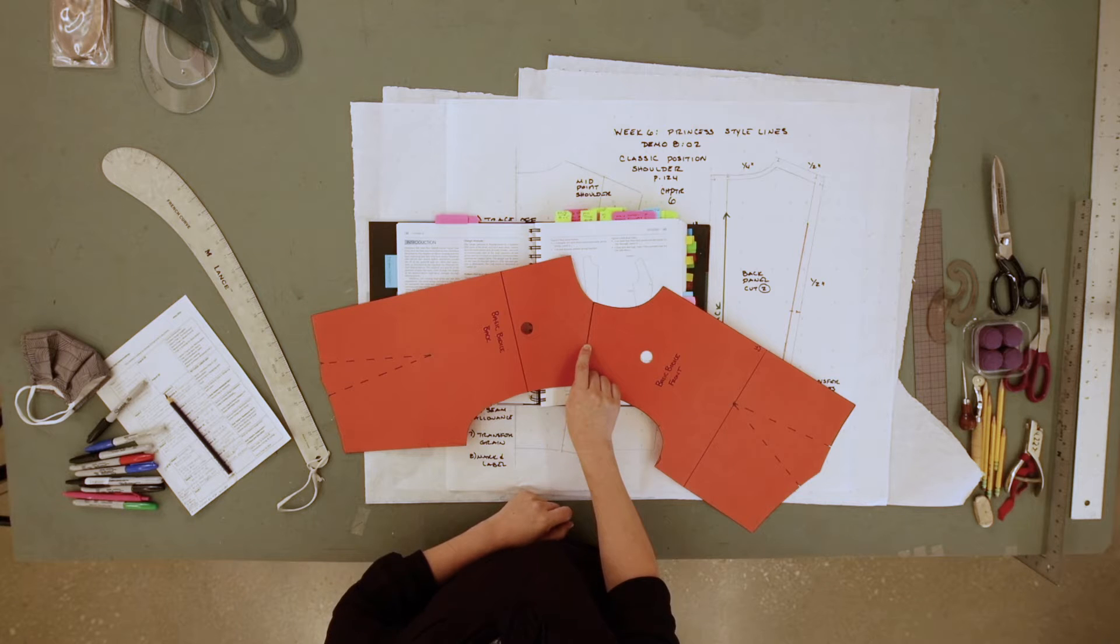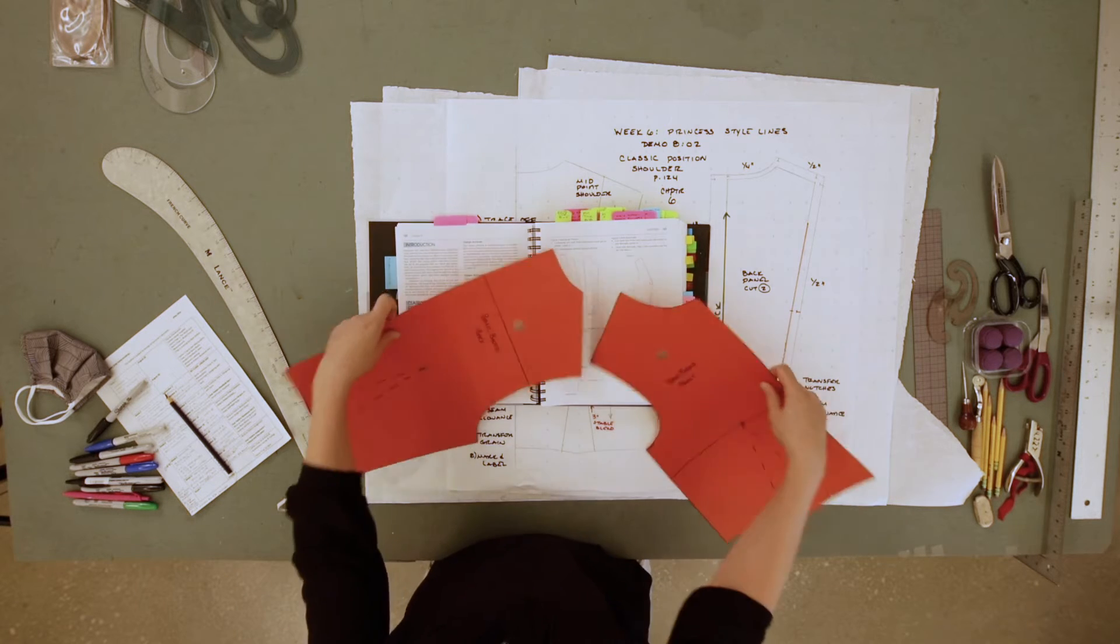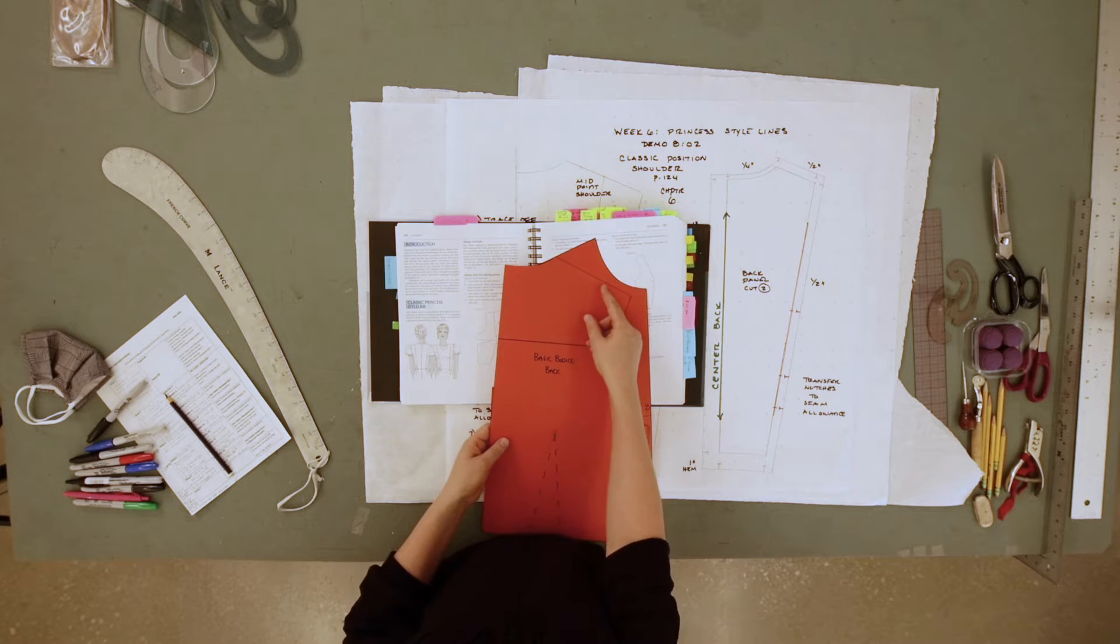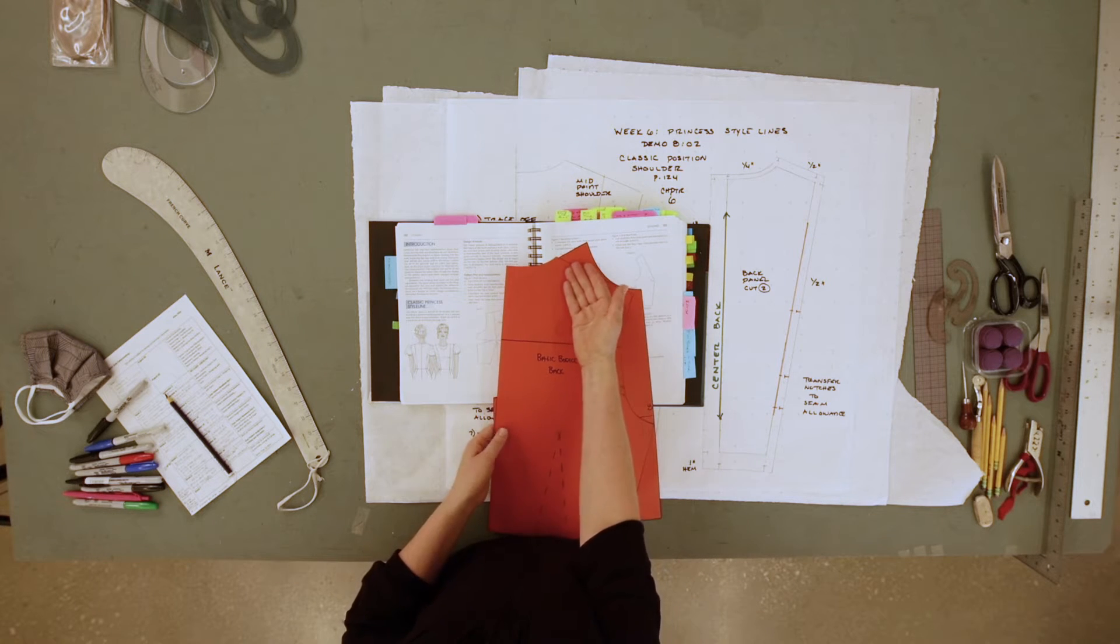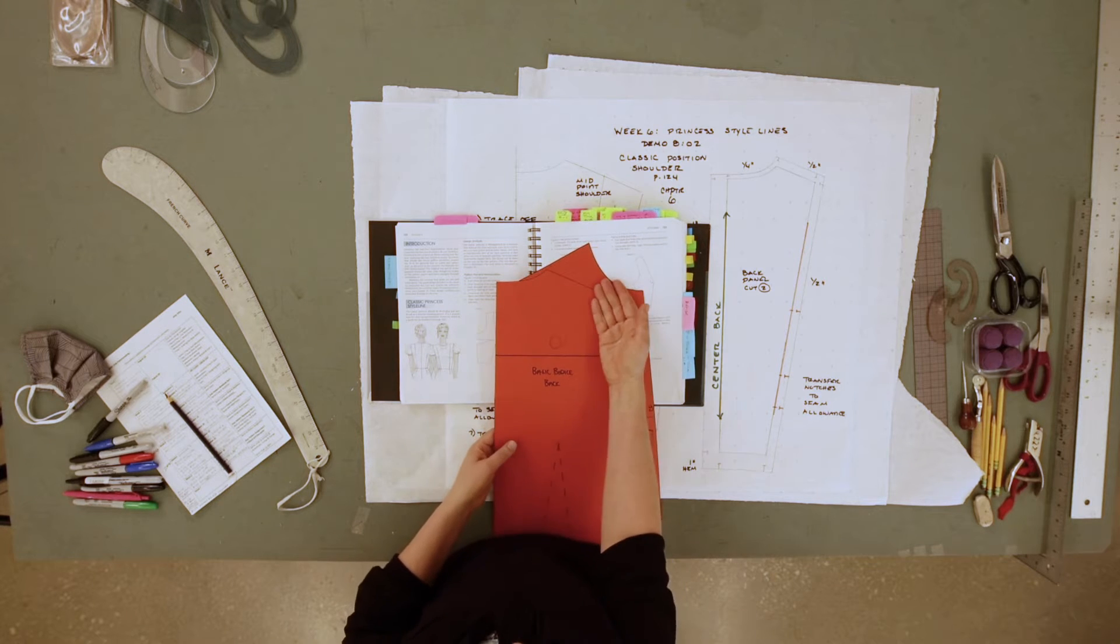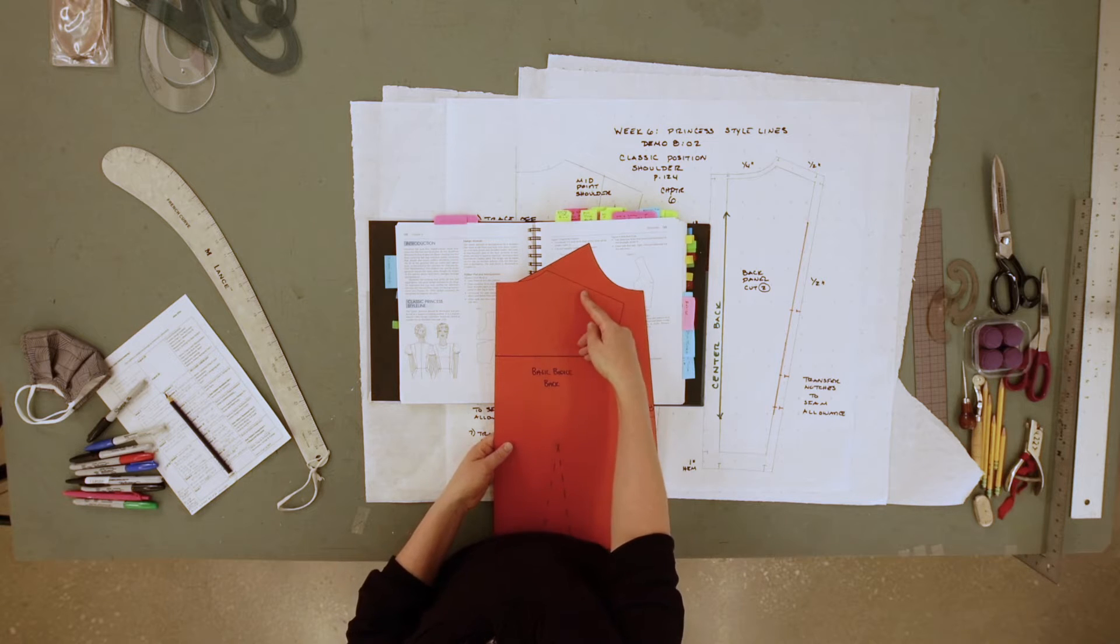This is super important about creating a balanced design because really where you place the style line is completely up to you. It can be closer to the neck, it can be closer to the shoulder, it's a design detail. For the purpose of this example, we're doing it at the midpoint shoulder.